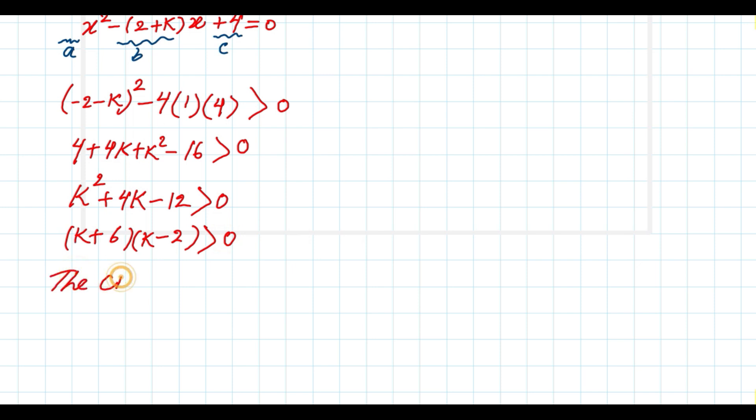Now we can get the critical points. The critical points are k equals negative 6, and the other is k equals 2.